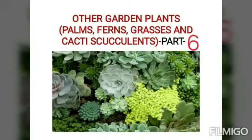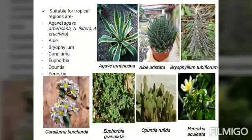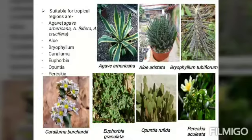Hello everyone, welcome once again to this channel. Today we'll continue with the topic of succulents. In the previous video we learned about the importance, uses, and the first part of selection — that is, selection according to locality, specifically succulents suitable for growing in temperate regions. We saw pictures of cotyledon, crassula, sedum, sempervivum — all belonging to the family Crassulaceae.